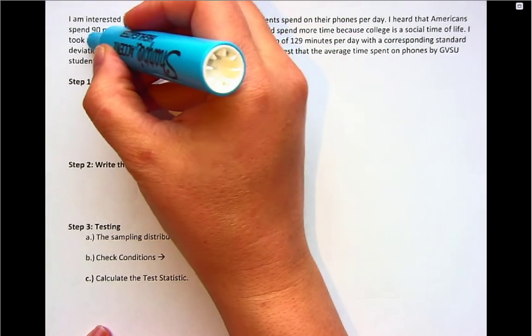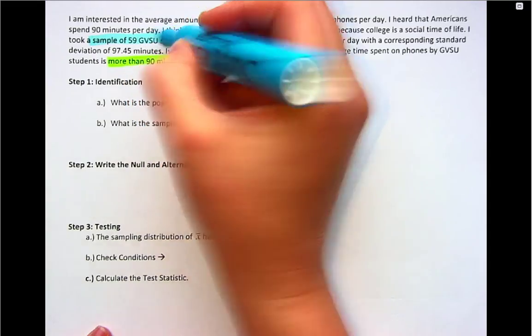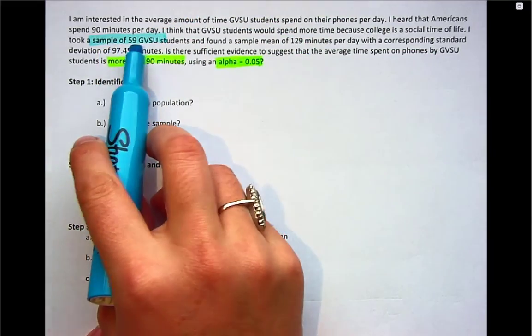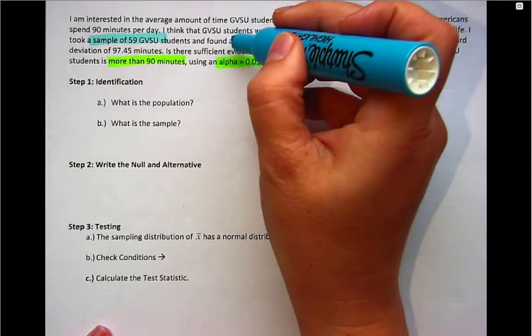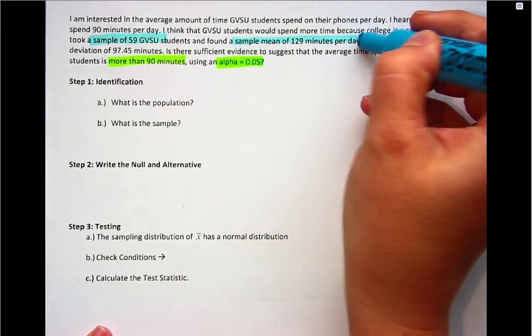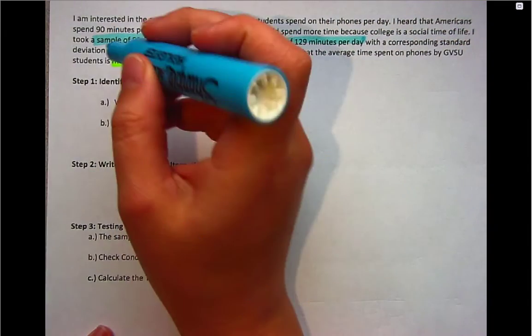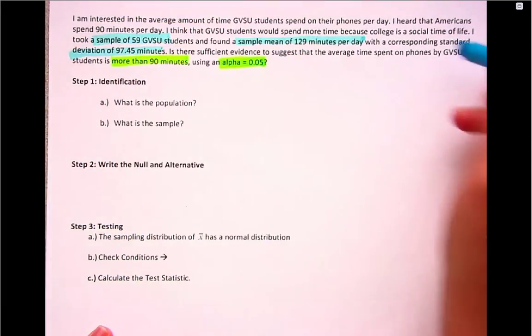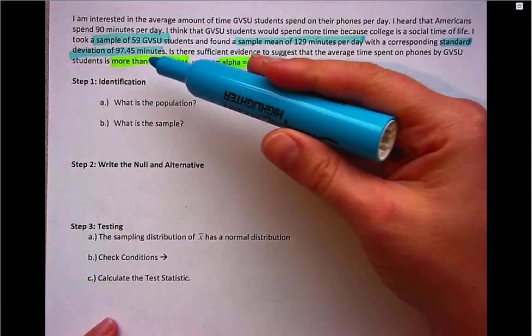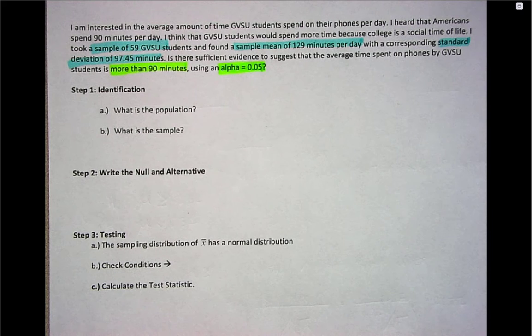Because I don't have raw data, I need to have my sample size, so I have 59 GVSU students. I need the sample mean, so I have a sample mean of 129 minutes, and then I also need standard deviation. So I have a standard deviation of 97.45 minutes.